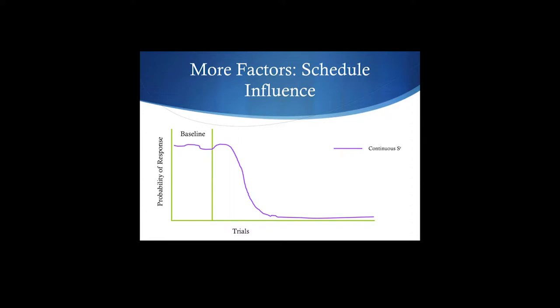The rate is the steepness of that extinction line. We've got behavior on extinction - probability of responses at one level at baseline. We're going to put it on extinction. Notice that it bumps up a little bit, not much, and it drops off really quick to near zero and stays there. That's what you see with a continuous reinforcement schedule.